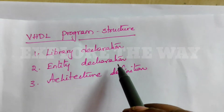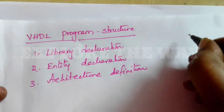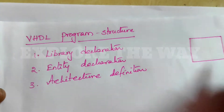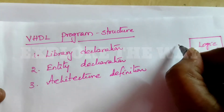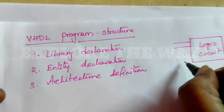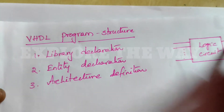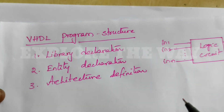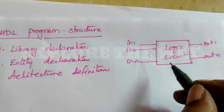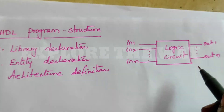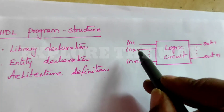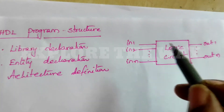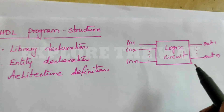The second one is entity declaration. Suppose we have a logic circuit. Any logic circuit consists of a number of inputs and a number of outputs. The inputs and outputs that are available to the outside are called primary inputs and primary outputs. These primary inputs and primary outputs are declared in the entity.